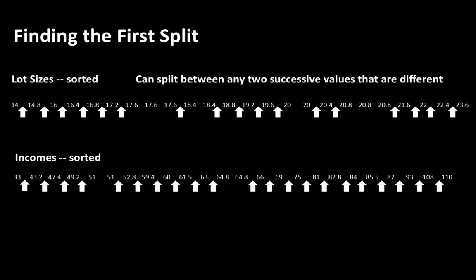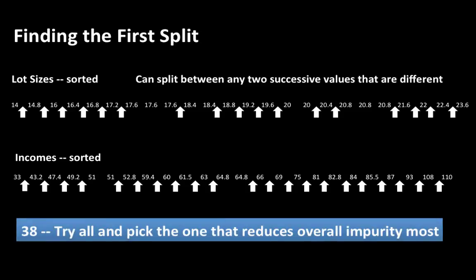Similarly, income has multiple possible partition points. In total, there are about 15–17 possible lot size partitions and a similar number of income partitions, giving roughly 30-plus possible ways to divide the original set. Out of all these, we want to choose the division that provides the maximum improvement in purity, whether measured by Gini index or entropy.